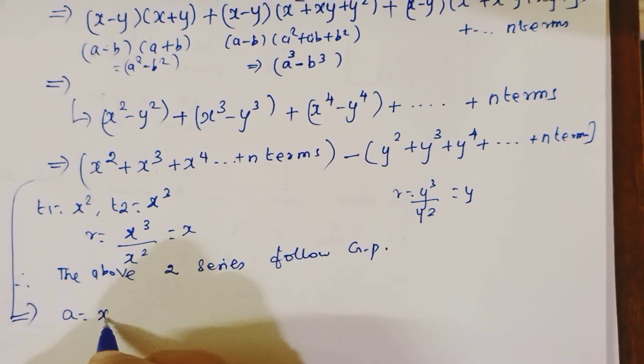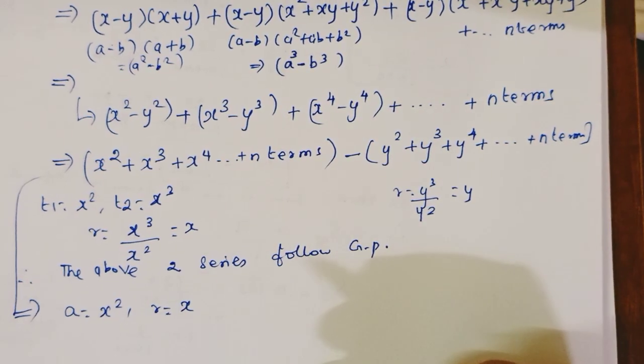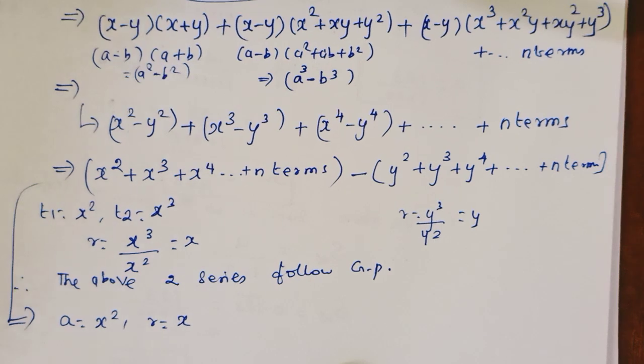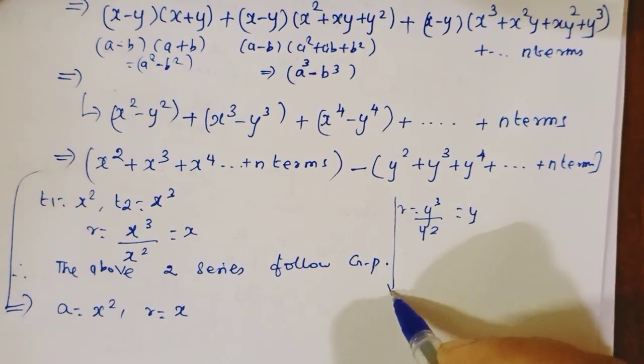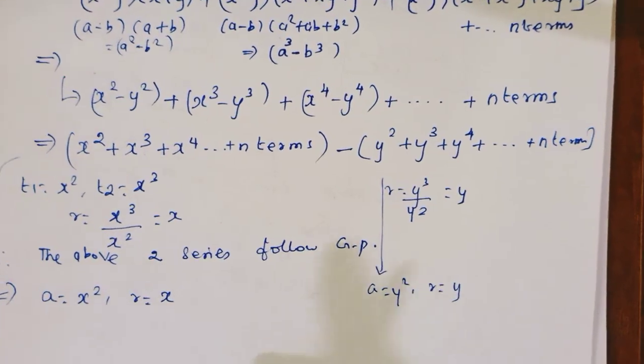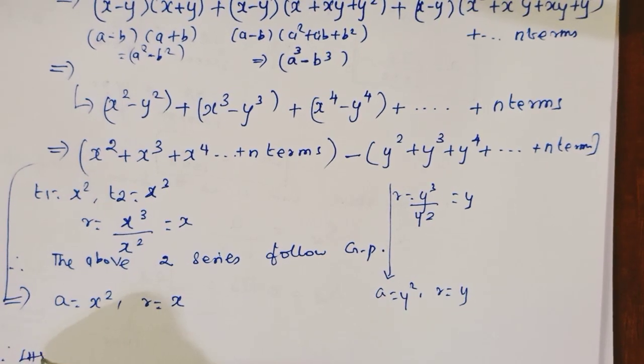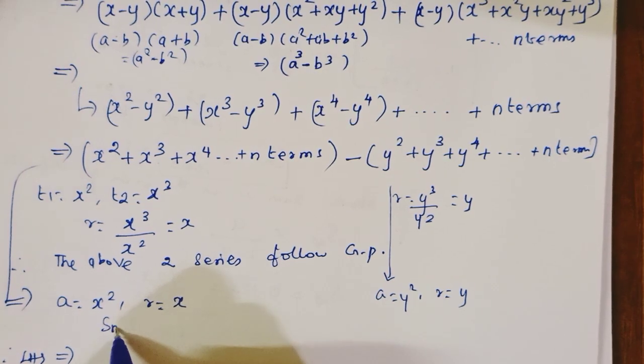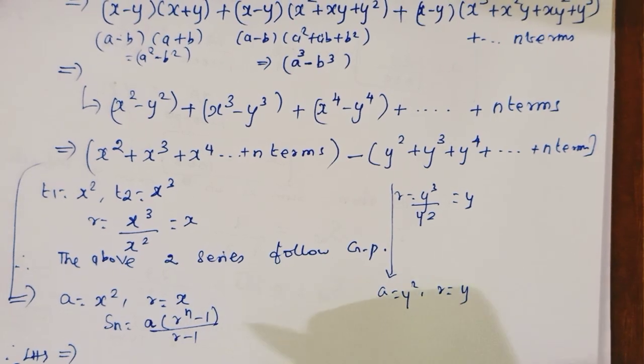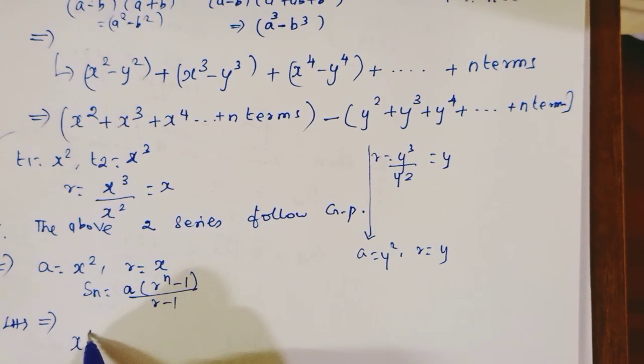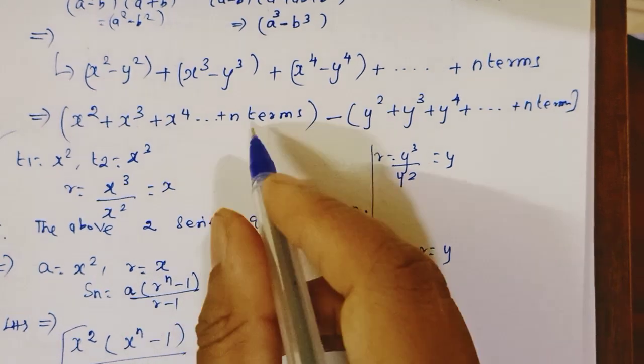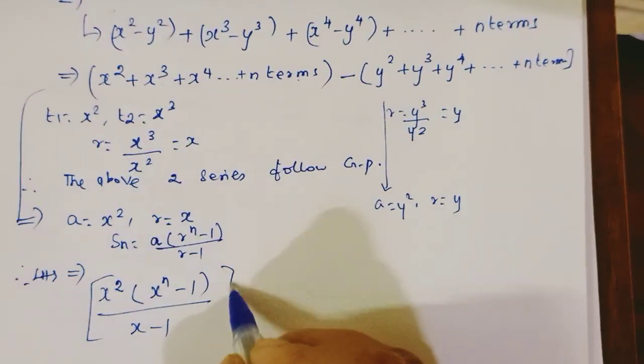Common ratio is same, therefore the above two series follow GP. First, a equals x², r equals x. The formula when r greater than 1: a·(rⁿ-1)/(r-1), which gives x²·(xⁿ-1)/(x-1). This is the first formula.